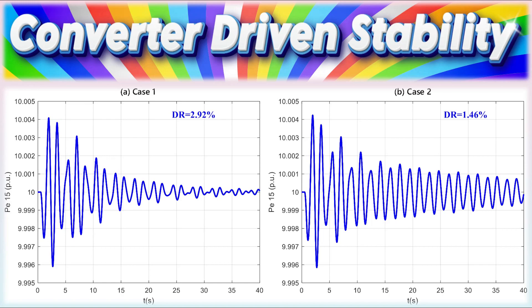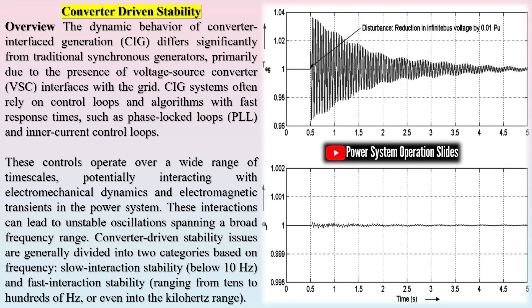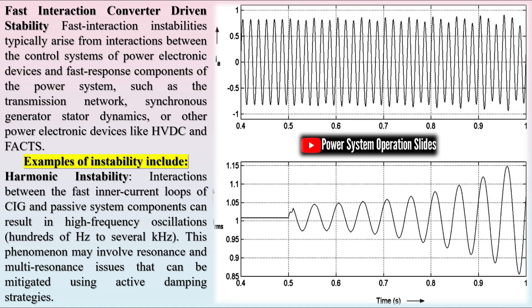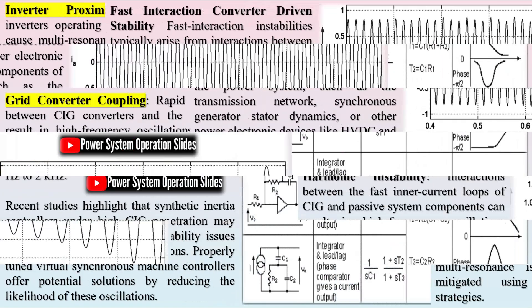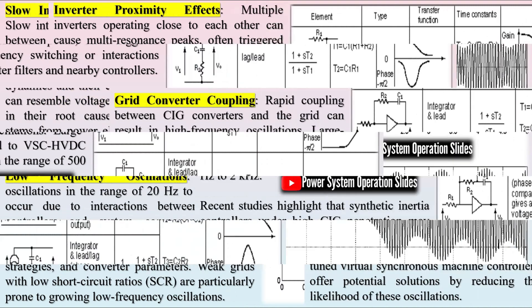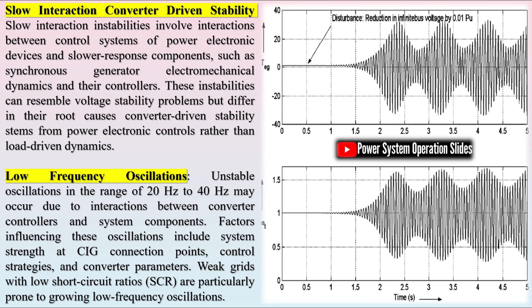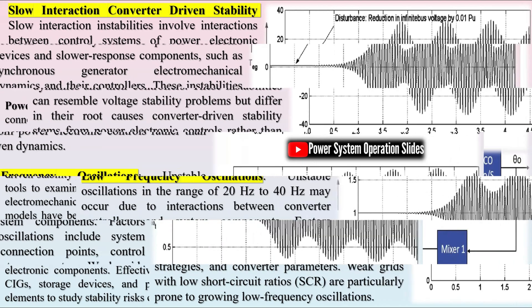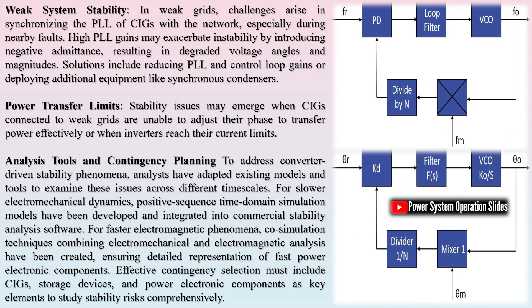The classification of power system stability has evolved to include new categories, reflecting the growing adoption of CIG technologies. Two additional stability classes — converter-driven stability and resonance stability — have been introduced to address challenges specific to CIGs, due to the unique dynamic behaviors associated with modern power electronic systems. In earlier classifications, sub-synchronous resonance was excluded because it fell outside the timescale of interest. However, with the inclusion of power electronic dynamics, the scope of stability analysis has expanded to encompass electromagnetic transients, broadening the timescale under consideration.